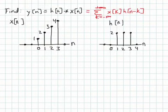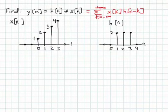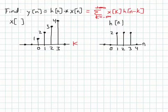The sequence x of k is pretty easy to obtain. We have the sequence x of n — we just rewrite it, erasing the n and replacing it with a k. So now we have x of k.